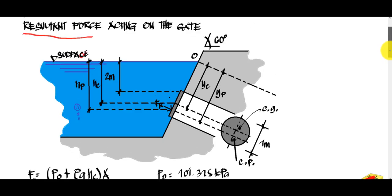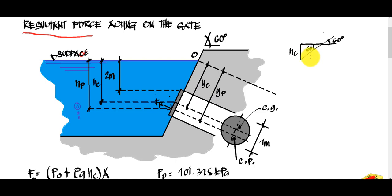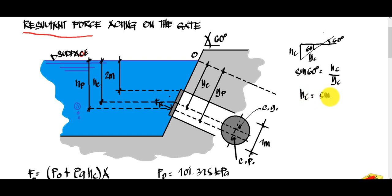Drawing a triangle to resolve hc: the angle is 60 degrees. Using trigonometry, sine of 60 degrees equals the opposite side hc divided by the hypotenuse yc. Therefore, hc equals sine of 60 degrees times yc.